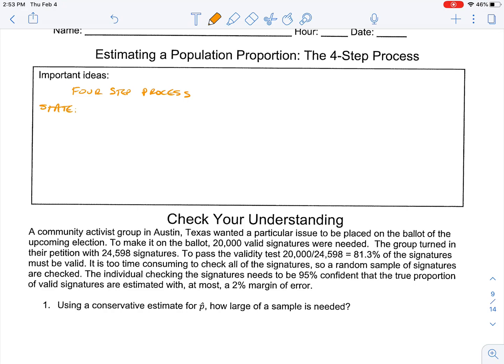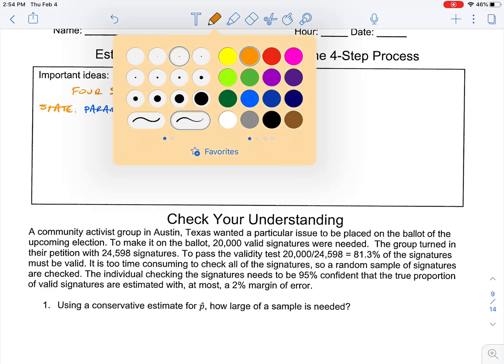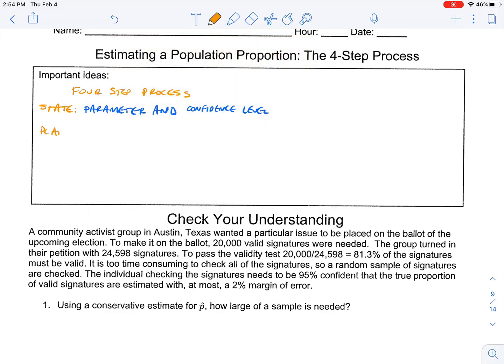It starts out with stating exactly what we're trying to figure out. So what we're going to do is we're going to state the parameter, what we're measuring, and also the confidence level. So we want to estimate the true proportion of people that own dogs in the United States at a 95% confidence level.